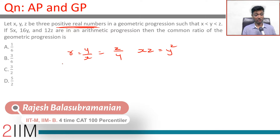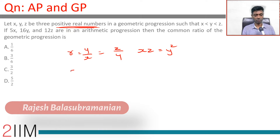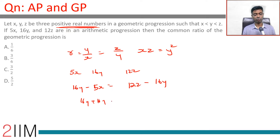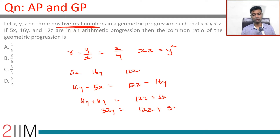5x, 16y, and 12z are in arithmetic progression. So, 16y minus 5x equals 12z minus 16y, which gives 16y plus 16y equals 12z plus 5x. Therefore, 32y equals 12z plus 5x.